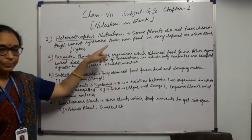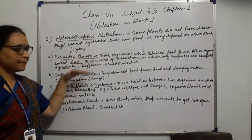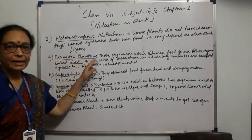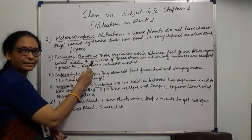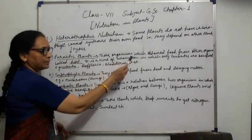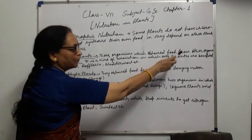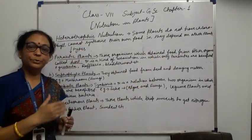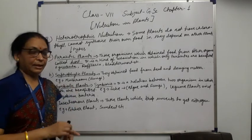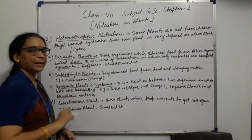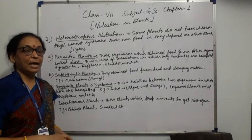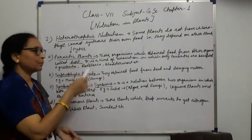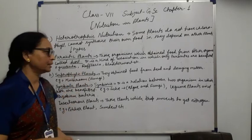So heterotrophic nutrition — in which type of plants does it occur? That is discussed here. The first type is parasitic plants. Those organisms which obtain food from other organisms — such plants are called parasitic plants, and the nutrition is called parasitic nutrition.